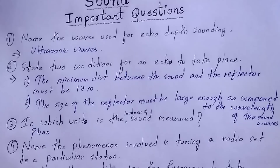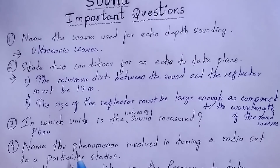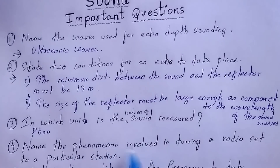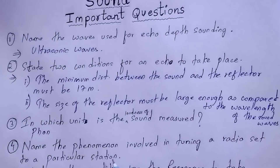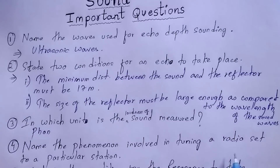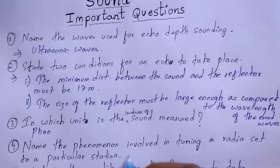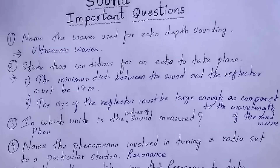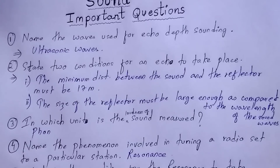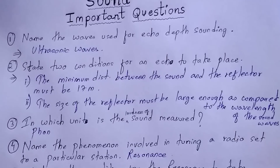Question number four: name the phenomenon involved in tuning a radio set to a particular station. The phenomenon used in tuning a radio station is resonance. You must also learn the definition of resonance because this question is repeated most of the time in board examinations.